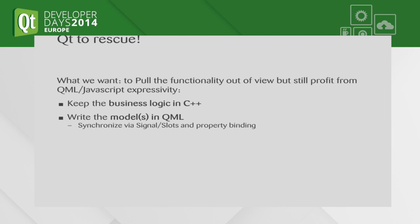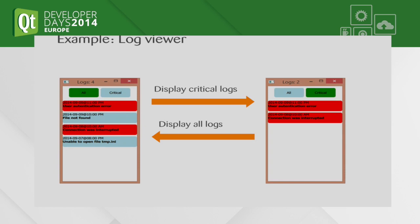Just a short example. This is a log viewer — a very simple application which just displays the log information from the system. We have two kinds of logs: critical ones, which are the red logs, and non-critical, which are the blue ones.